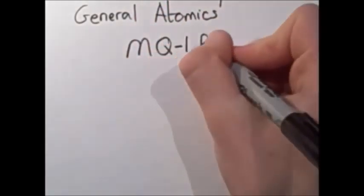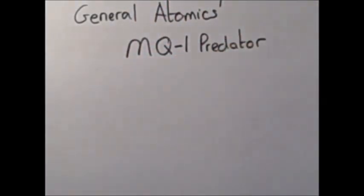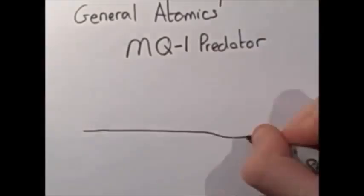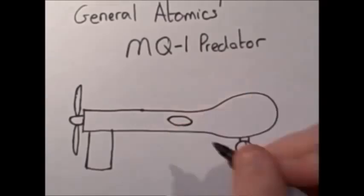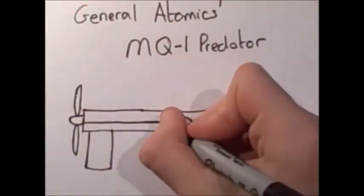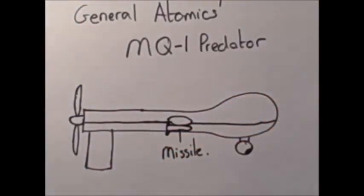General Atomics MQ-1 Predator is a drone used by the USA and can carry up to two Hellfire missiles. When the missiles are fired, they rocket forward and towards the ground.